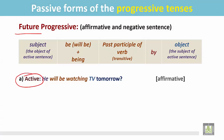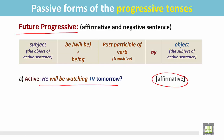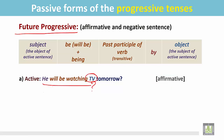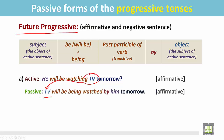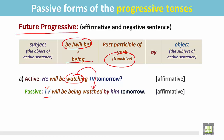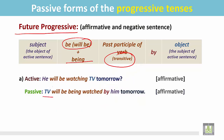Here is an active sentence in the future progressive, affirmative form: 'He will be watching TV tomorrow.' The object of the verb 'watching' is TV. In the passive, the object becomes the subject: TV. Then the helping verb 'will be' with 'being,' and the past participle of the transitive verb 'watch' becomes 'watched,' followed by the preposition 'by,' and the subject becomes the object: 'TV will be being watched by him tomorrow.'